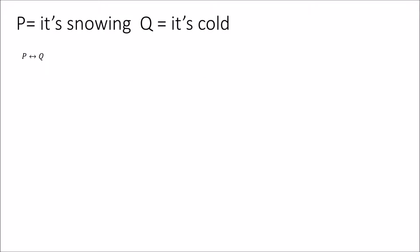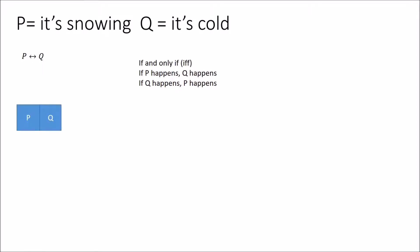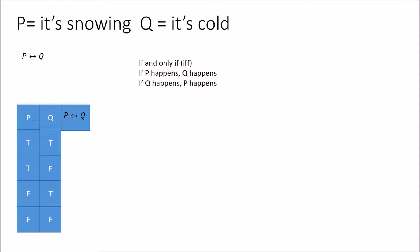The next symbol is a two-way arrow as opposed to the one-way arrow. This is known as if and only if — a mutual dependence. It means they both have to agree with each other. If P happens then Q needs to happen, and if Q happens then P has to happen. Looking at the truth table: true-true means if it's snowing then it's cold, so this statement is true.